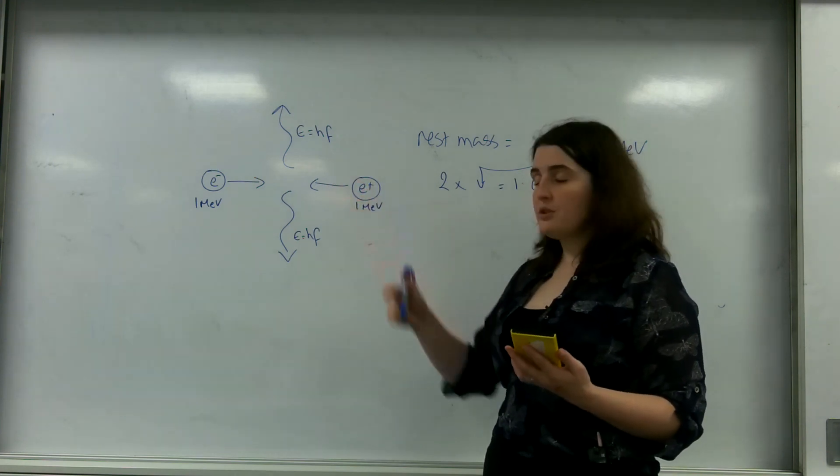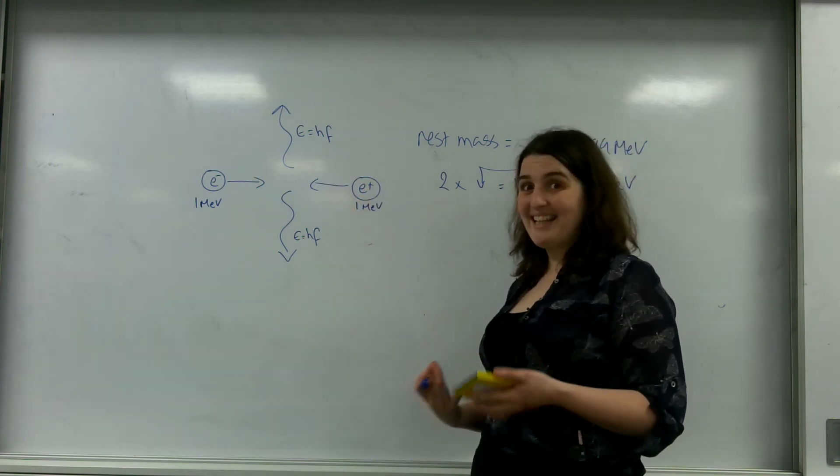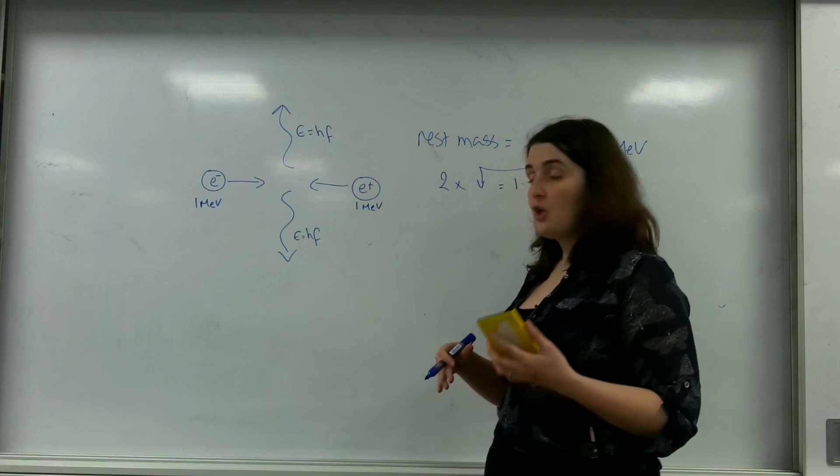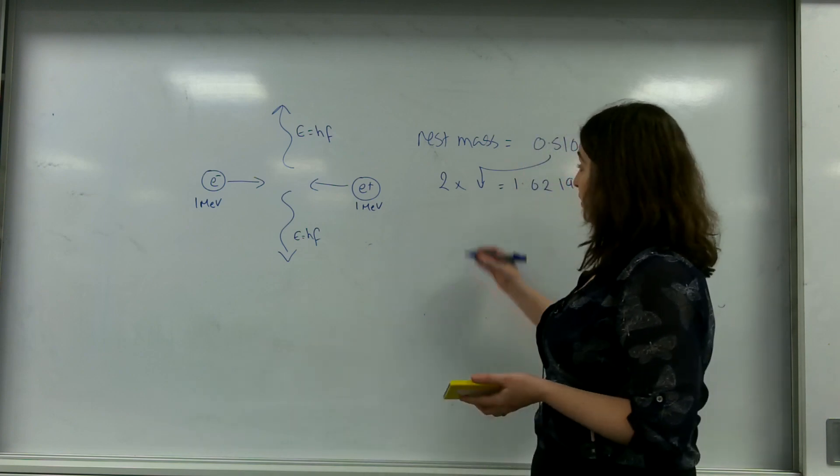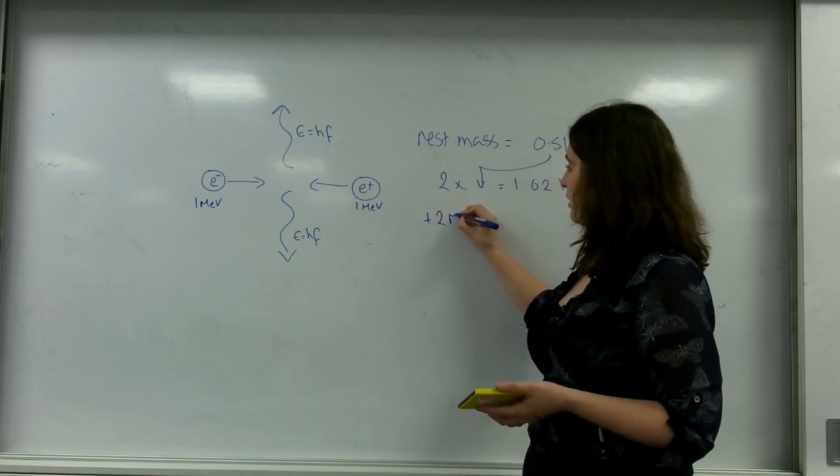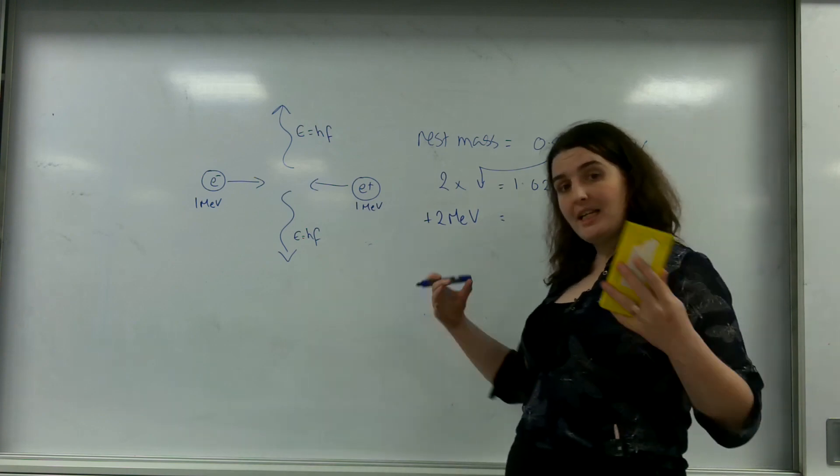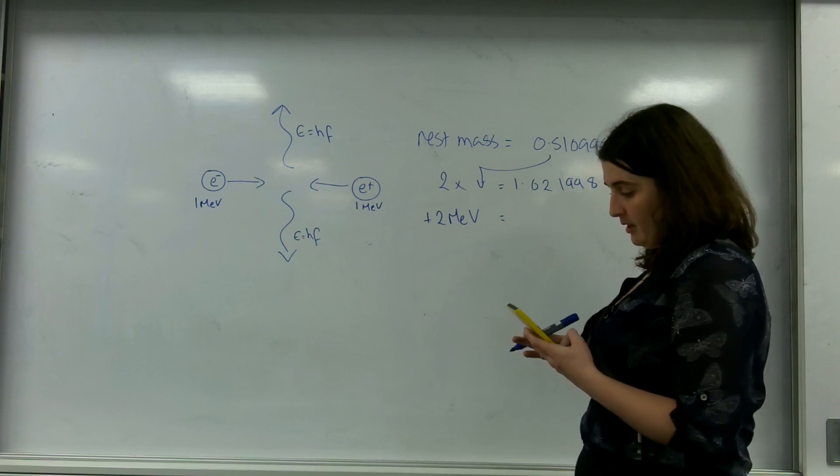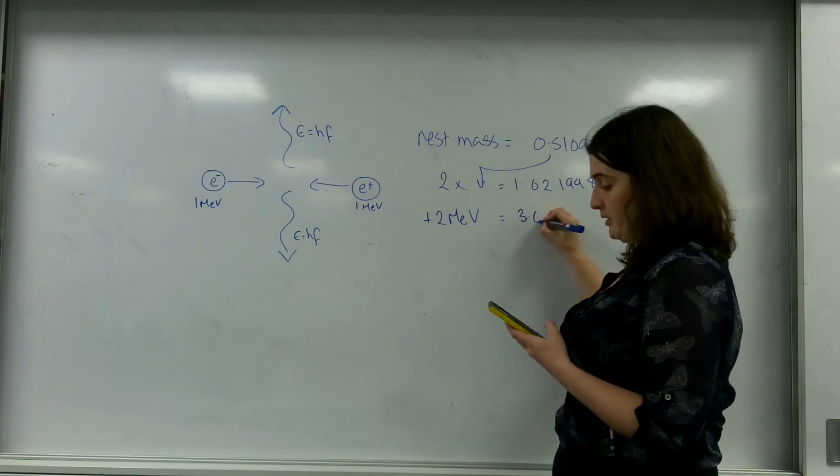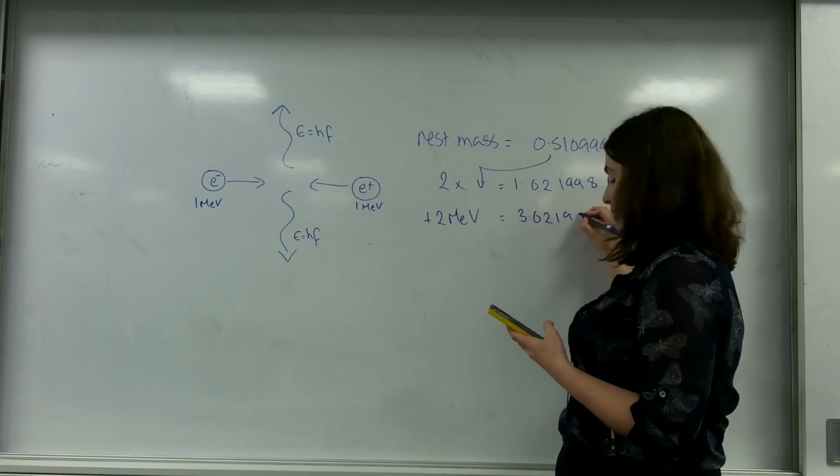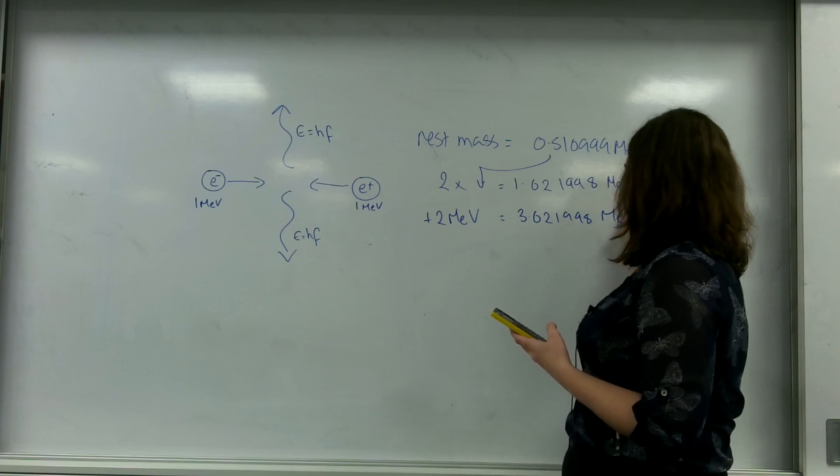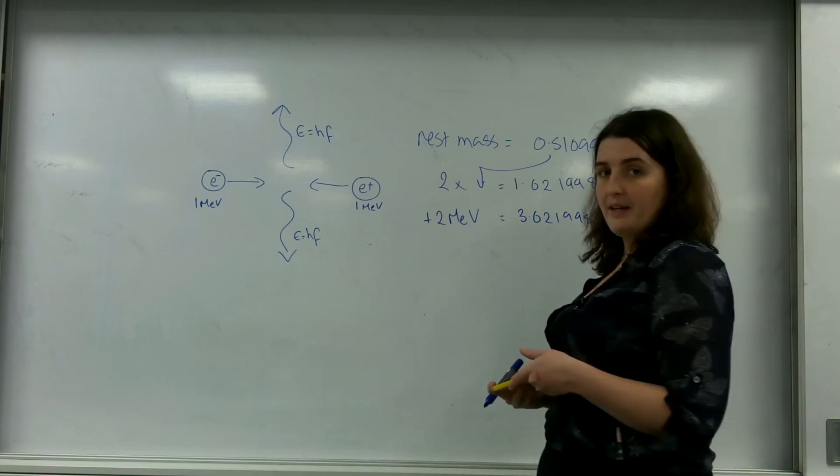These two particles also have kinetic energy, and that totals 2 mega electron volts. So I need to add that on as my total energy into the system, which brings me to 3.021998 mega electron volts of energy.